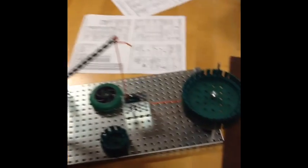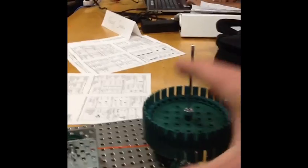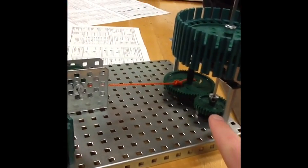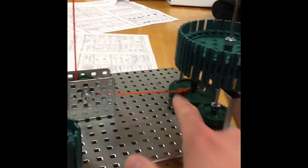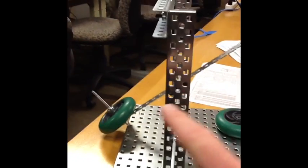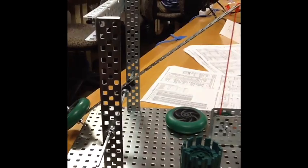Compound machine number three. We have a wheel and axle here that turns a gear, so we have a gear train here with a fixed pulley to a first class lever.